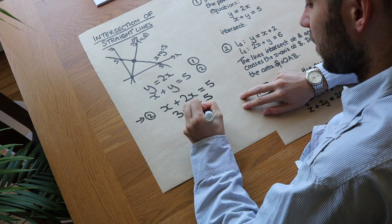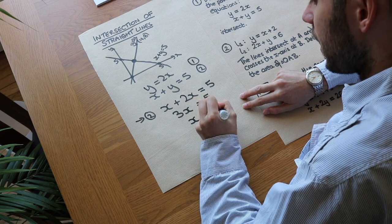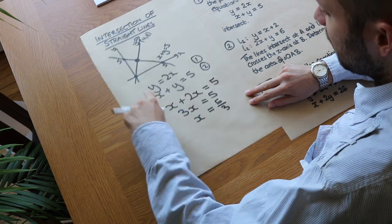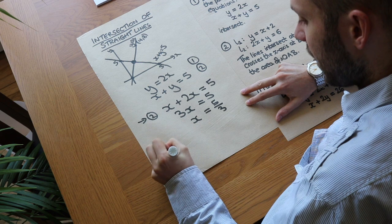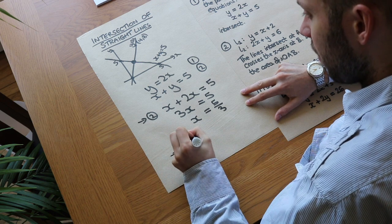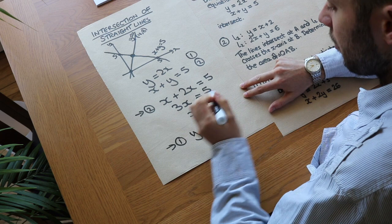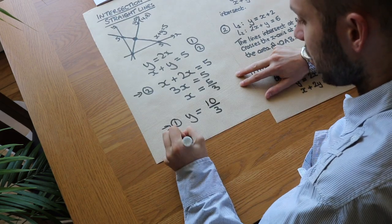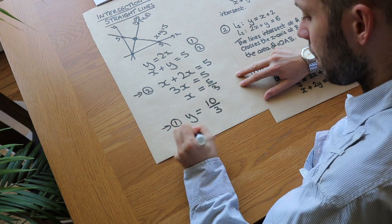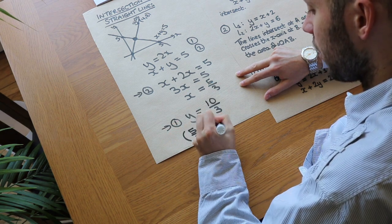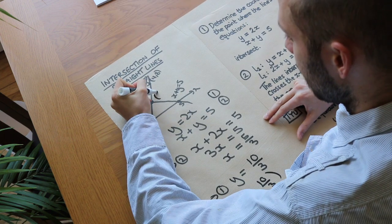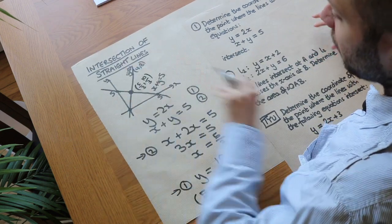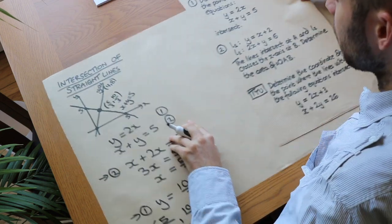So x equals 5 over 3. To find y, we substitute back into equation 1: y equals 2 times 5 over 3, which is 10 over 3. Therefore the point of intersection is (5/3, 10/3). To find the point of intersection, you simply solve the two equations simultaneously.